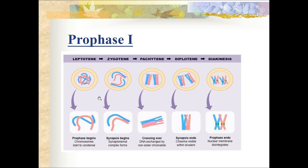During zygotene stage - 'zygon' means adjoining - the two homologous chromosomes approach each other and begin to pair. This pairing of homologous chromosomes is called synapsis. During pachytene stage - 'pachys' means thick - chromosomes are very visible as long paired twisted threads. These pairs are called bivalents and each bivalent contains four chromatids, so this stage is called the tetrad stage.